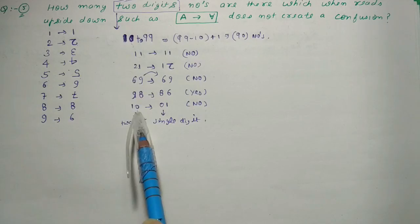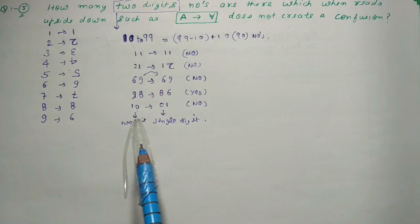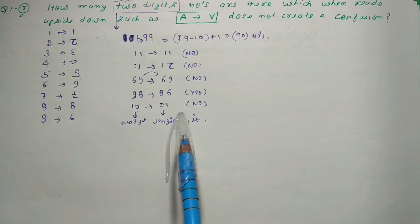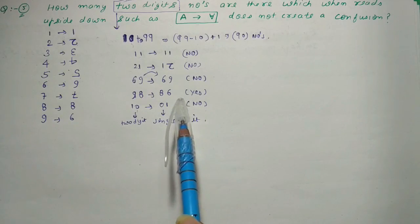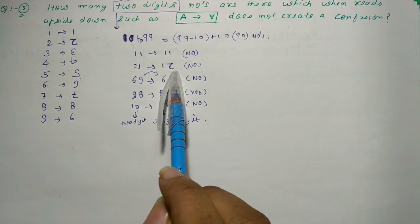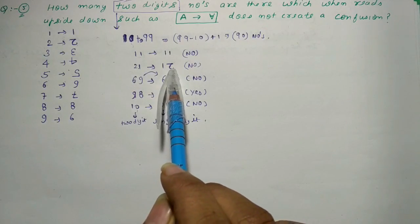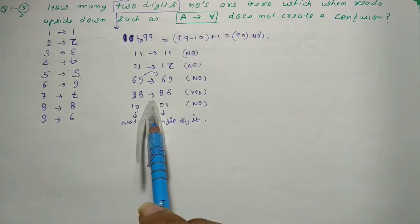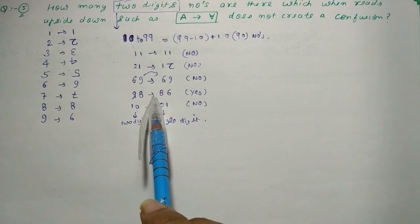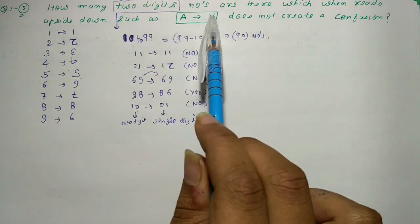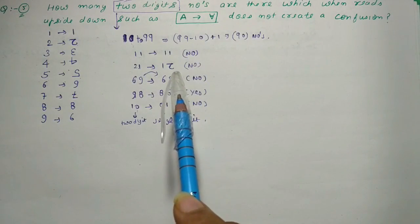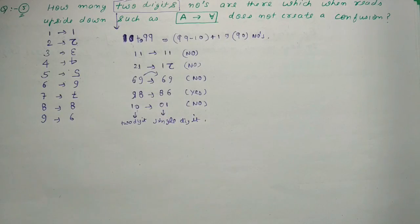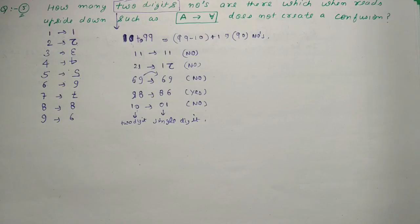Numbers like 98 and 81 create confusion. 81 will convert into 18, 86 will convert into 98, 89 will convert into 68. So basically hum wo numbers nikaalenge jo confusion create karte hain aur unhe 90 mein se minus karenge. From 10 to 19: 16 will become 91, 18 will become 81, 19 will become 61 — so 3 confusion-creating numbers. From 20 to 29, 30 to 39, 40 to 49, 50 to 59: in sab mein 2, 3, 4, 5 aisa character form karte hain jo hum jaante nahi — so 0 confusion each.